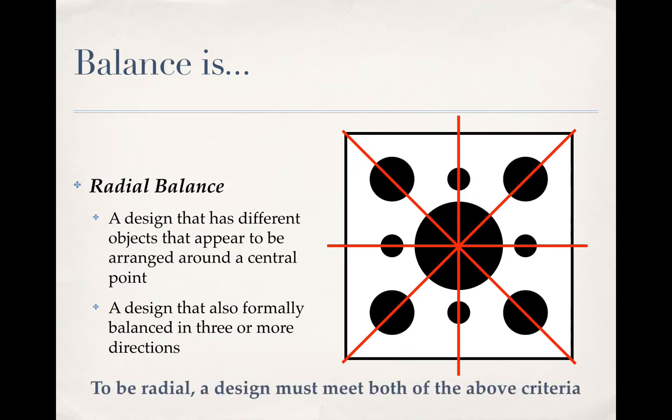So I can divide it vertically, horizontally, and on both diagonals, and I have a mirror image no matter which of those four ways I split the design. For my intents and purposes, a radial design must meet both of these criteria to be considered truly radial.